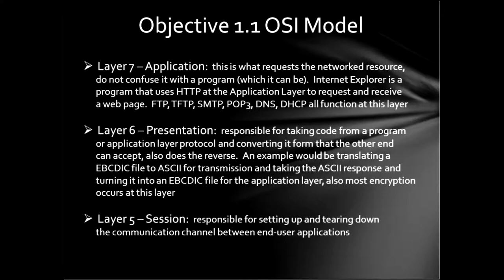Layer six, the presentation layer, is responsible for taking code from a program or application and converting it into a format that the other end can accept. When the receiving layer six receives it, it converts it into a format that its layer seven can handle. A great example is taking an EBCDIC file from layer seven and breaking it down into ASCII for transmission, then reversing it at the other end. Even if both layer seven applications speak the same language, the presentation layer is still involved.